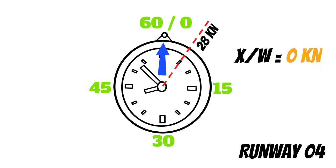This is why you need to learn how to divert to another airfield, and I hope to discuss this in a future video. But again, if this 20-knot limit is a maximum demonstrated limit and not a do-not-exceed number, and you've been flying for a while and you're comfortable giving it a shot, you can always give it a try — worst case, you can always go around if you need to.